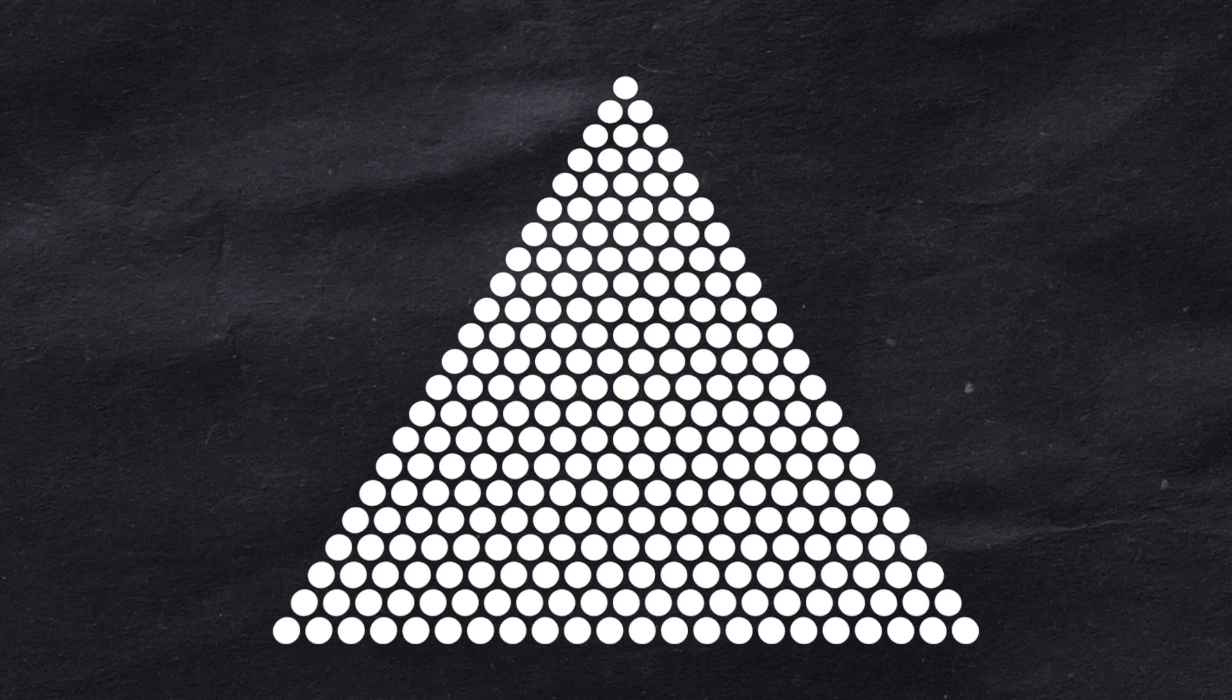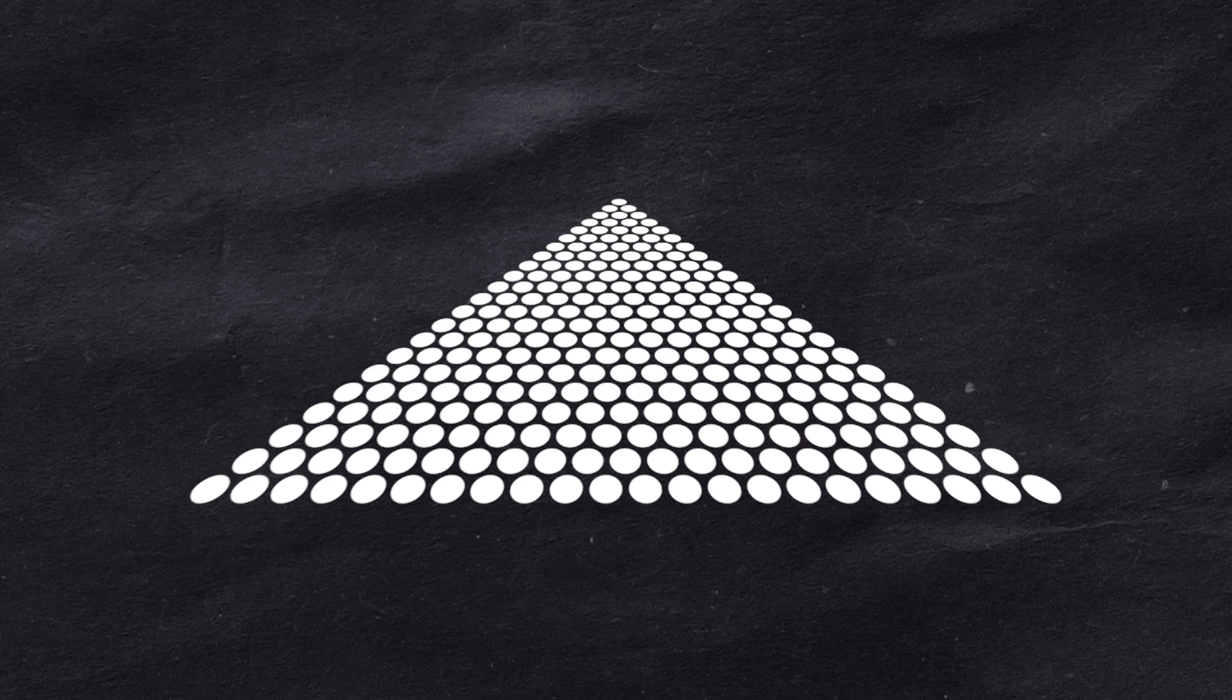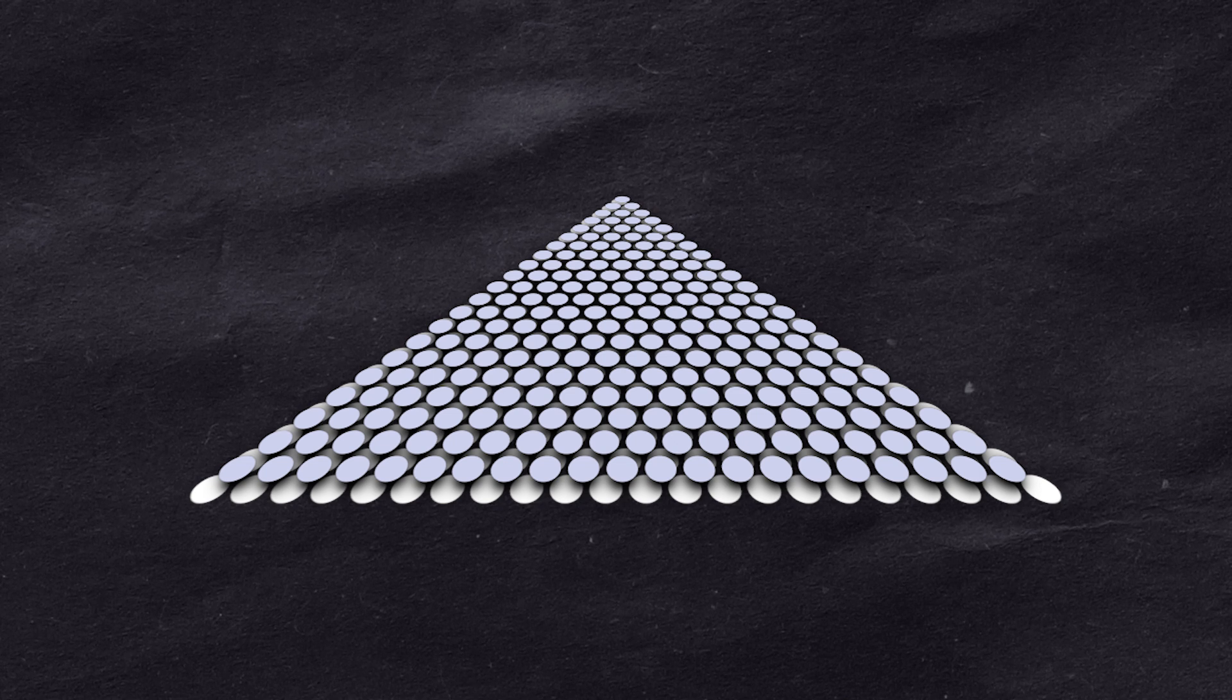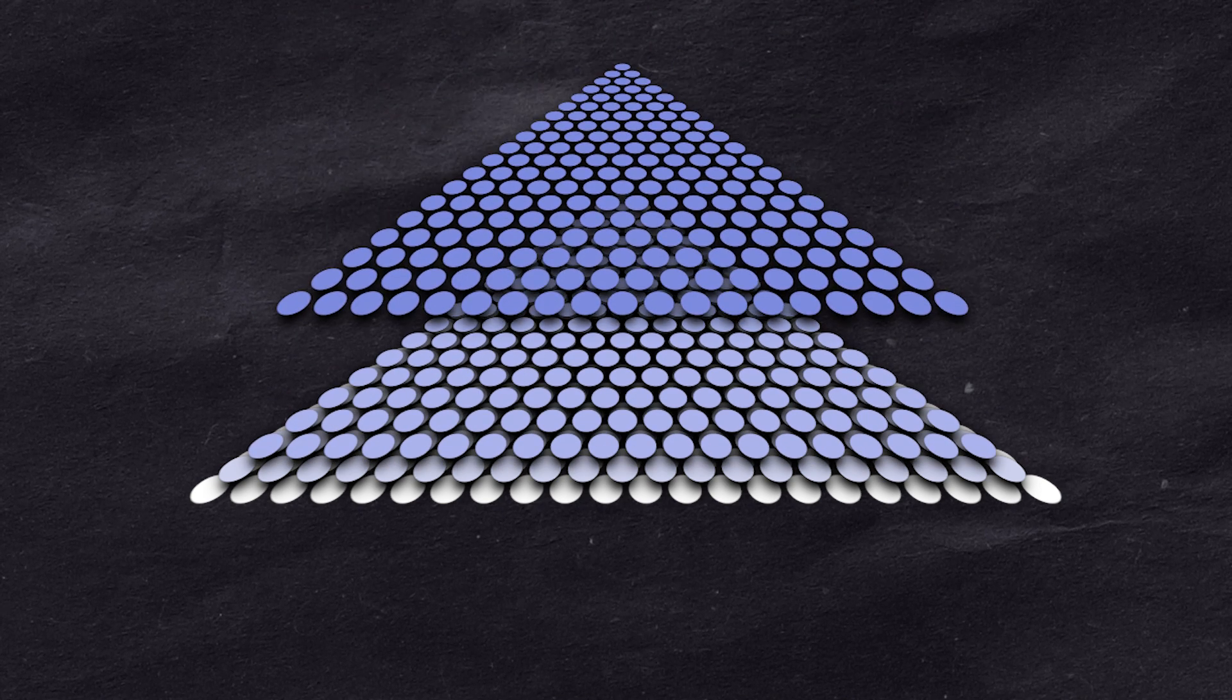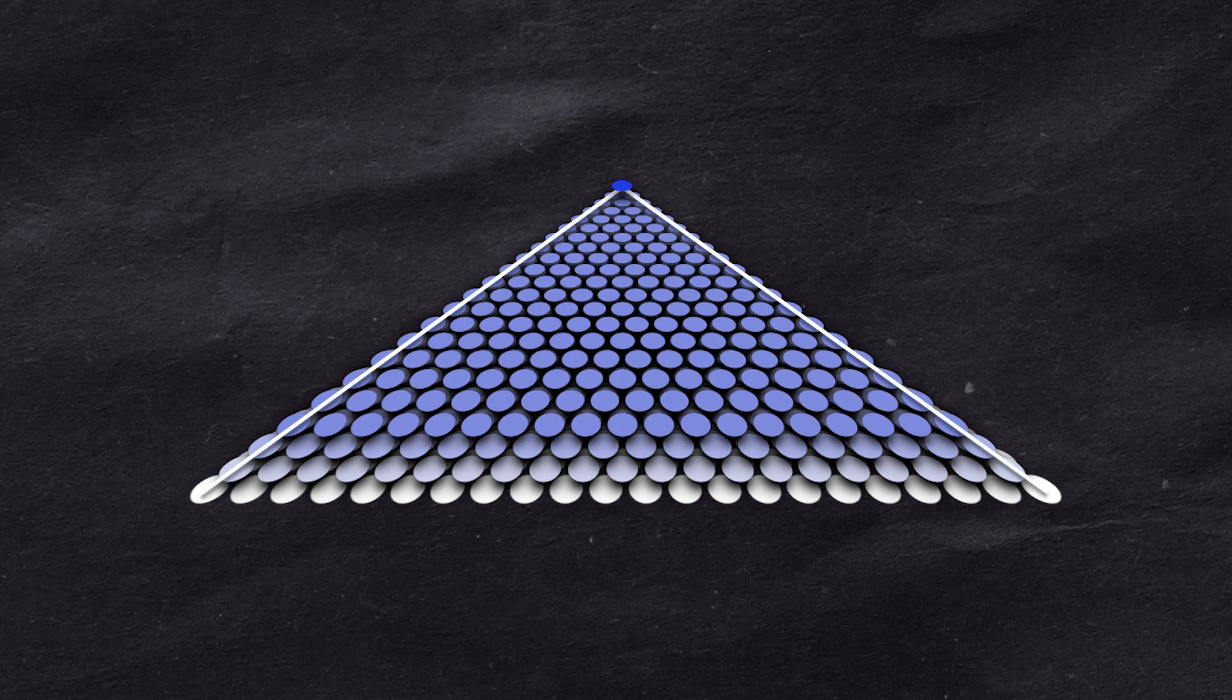Now this triangle will be a base for the earlier mentioned pyramid. We are building it from the ground up, so the next layer will be a triangle with exactly 21 balls on the side. Next we'll have a 20-ball triangle, 19-ball triangle, up to a one-ball triangle, which will be the top of our pyramid.